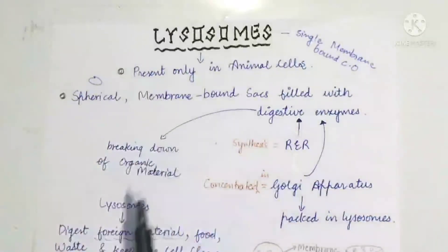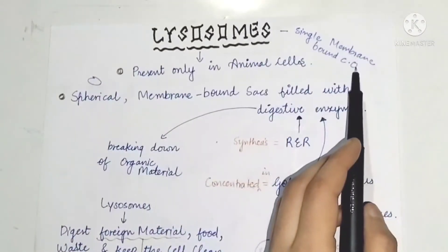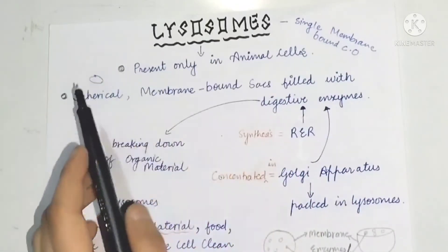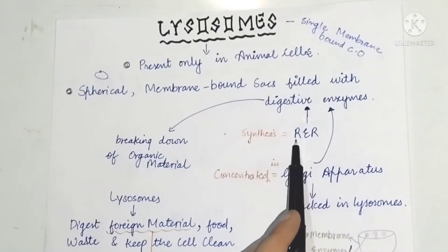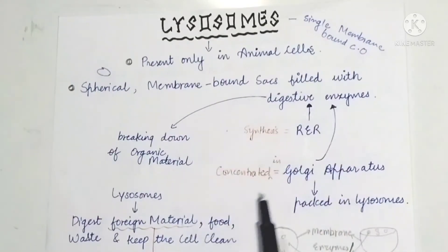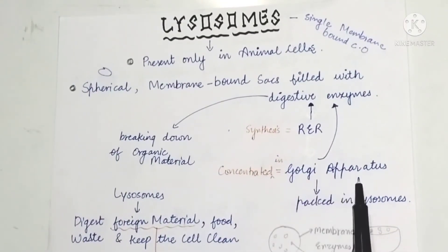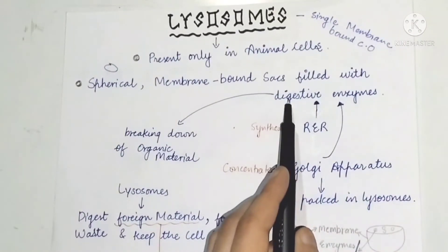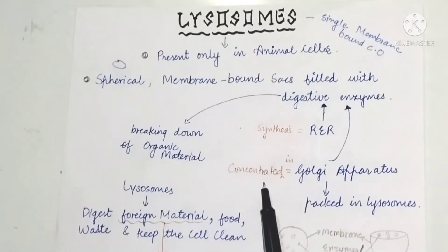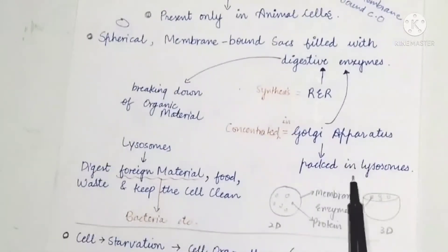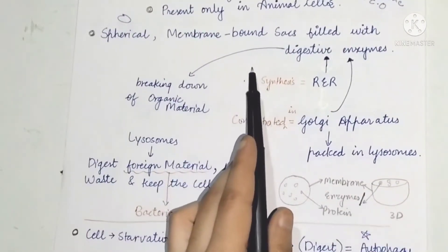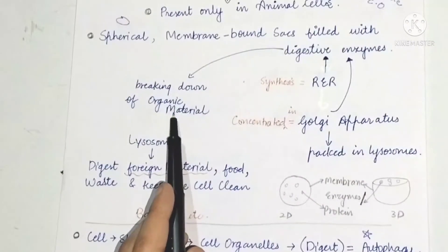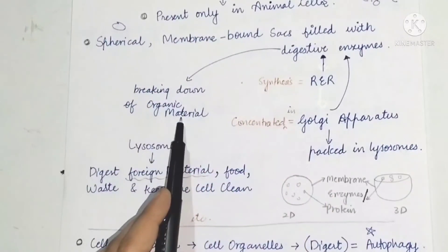Now let's recall the entire lecture. Lysosomes are single membrane-bound cell organelles, only present in animal cells, spherical, filled with digestive enzymes. The digestive enzymes are made in the rough endoplasmic reticulum by ribosomes, then concentrated and modified in the Golgi apparatus, and finally packed into lysosomes.